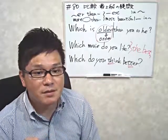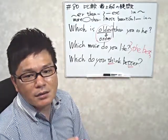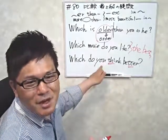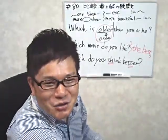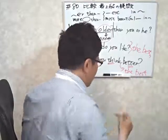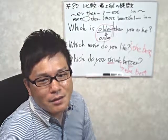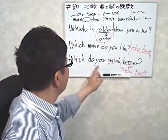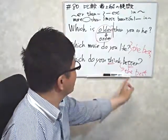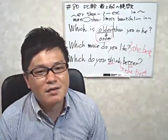また、「どっちが？」ではなく「この中でどれが一番いいと思う？」という場合は、「better」の代わりに「the best」を使います。「Which do you think the best?」という形で、「あなたはどれが一番いいと思いますか？」という意味になります。